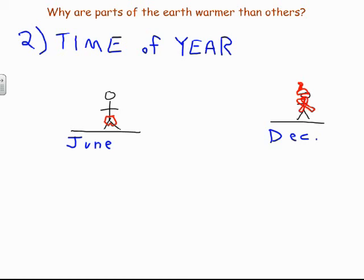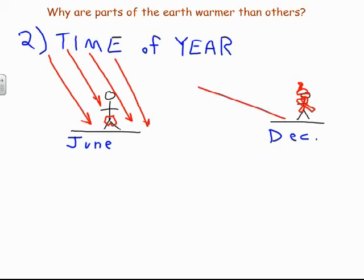The reason this is happening is because in June, the angle of insolation is higher than in December. In December, that angle of insolation is much lower. A lower angle of insolation means it's less intense, and if it's less intense you're going to have less heat, or lower temperature. So time of year also has an effect on the angle of insolation and therefore the temperature — and again, we could graph this.